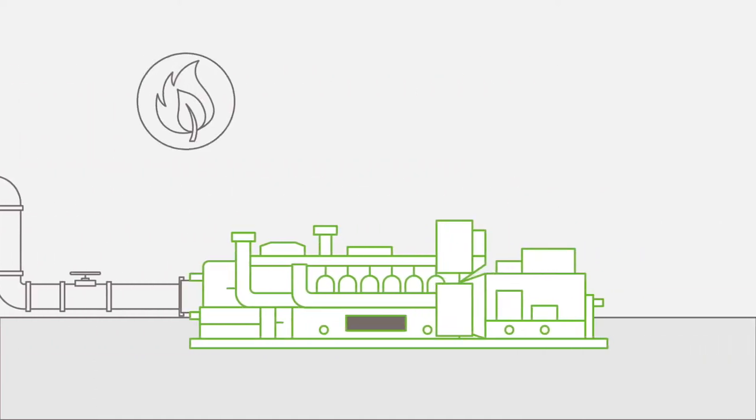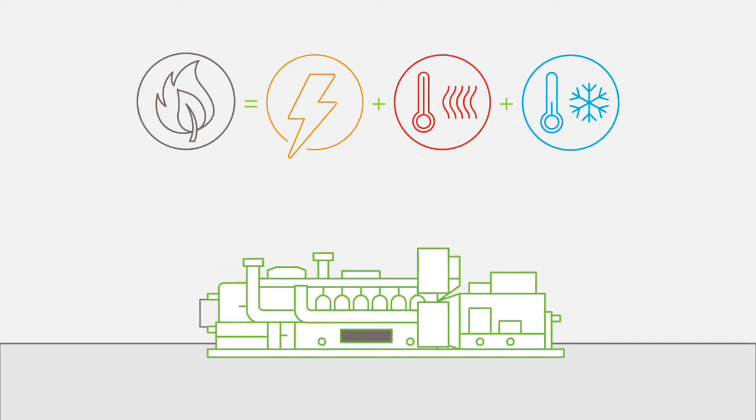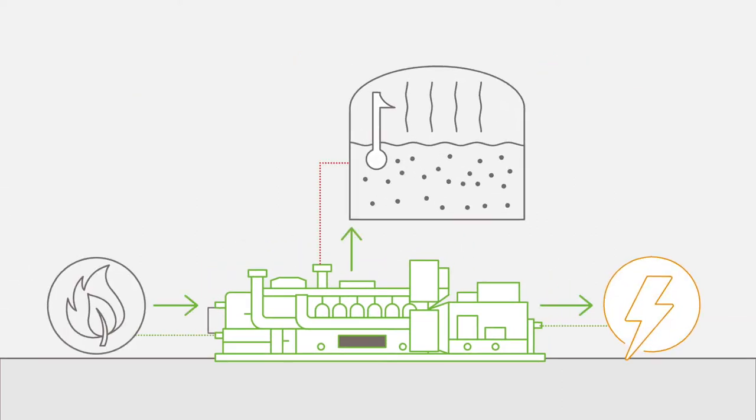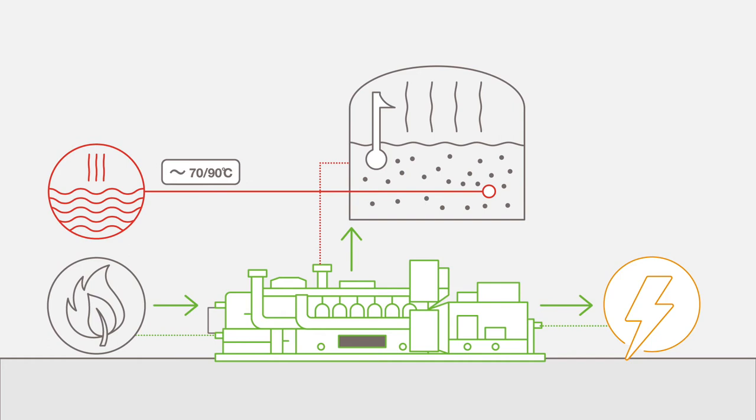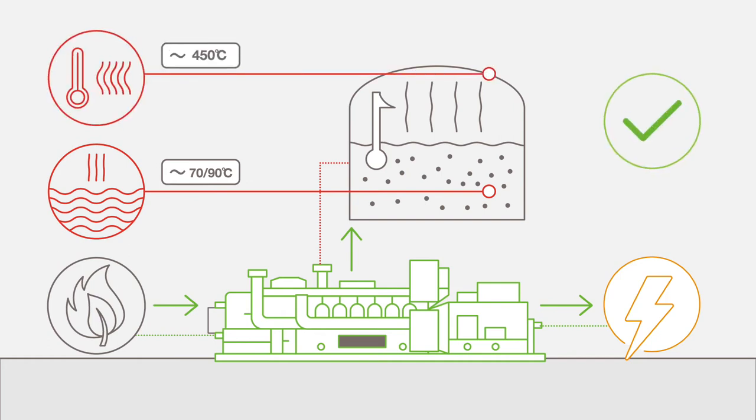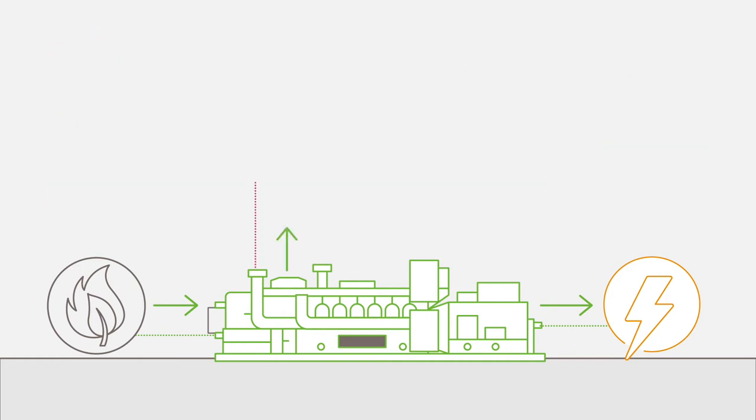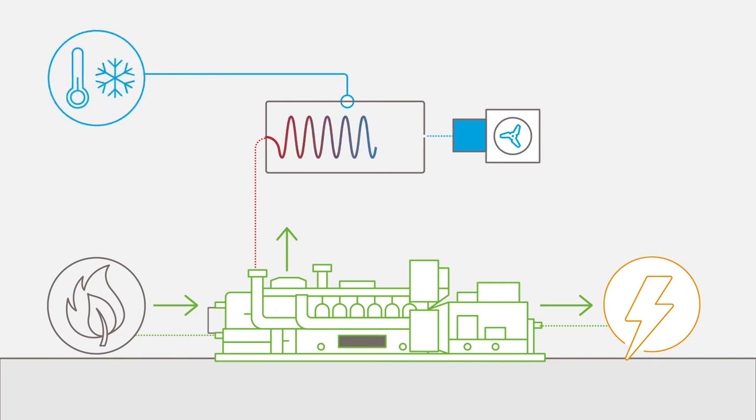Gas engines fueled with biogas can generate electricity and provide heating and cooling. Heat can be recovered from the engines in the form of hot water, steam, or high temperature air. Cooling can also be generated via heat conversion absorption chillers providing low temperature air or cold water.